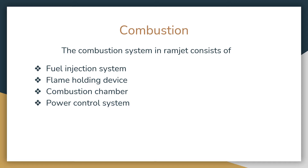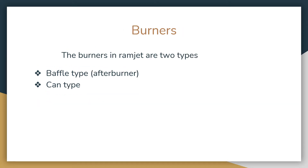The flame holding device is used to hold the flame at high speeds to generate more heat and burn the fuel-air mixture. The combustion chamber is the empty space which is meant to provide for the expansion of gases. The power control system controls the amount of fuel flow into the combustion chamber.